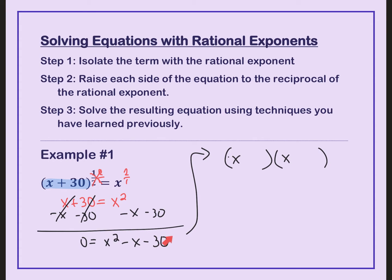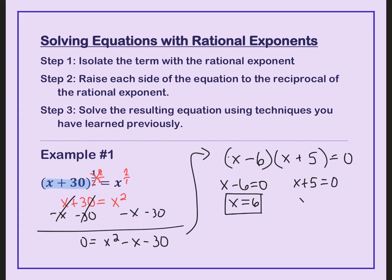Two numbers that multiply to negative 30 and add to negative 1 — that's going to be 6 and 5. Because they add to negative 1, the negative number is bigger. Take each factor and set it equal to 0: x minus 6 equals 0 and x plus 5 equals 0. Add 6 to both sides, and subtract 5 from both sides — we get x equals 6 and x equals negative 5.